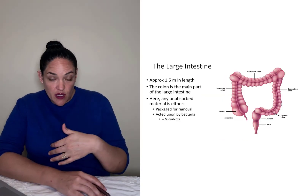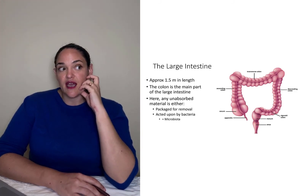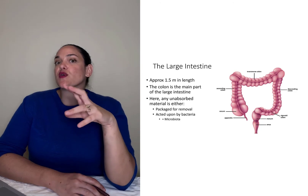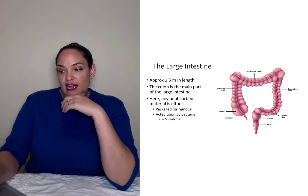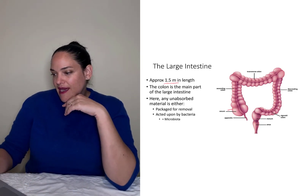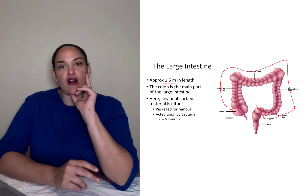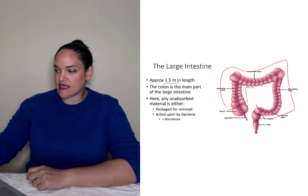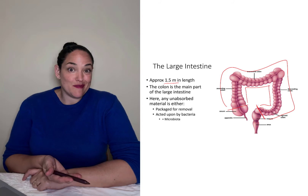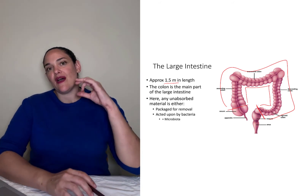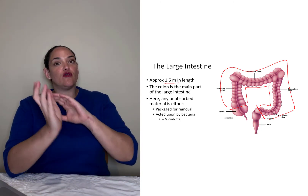After the small intestine, whatever is left over moves into the large intestine, where material spends the most time. The large intestine is about one and a half meters in length, and its main portion — the colon — is divided into the ascending, transverse, descending, and sigmoid colon. The main goal of the large intestine is to prepare material for excretion.